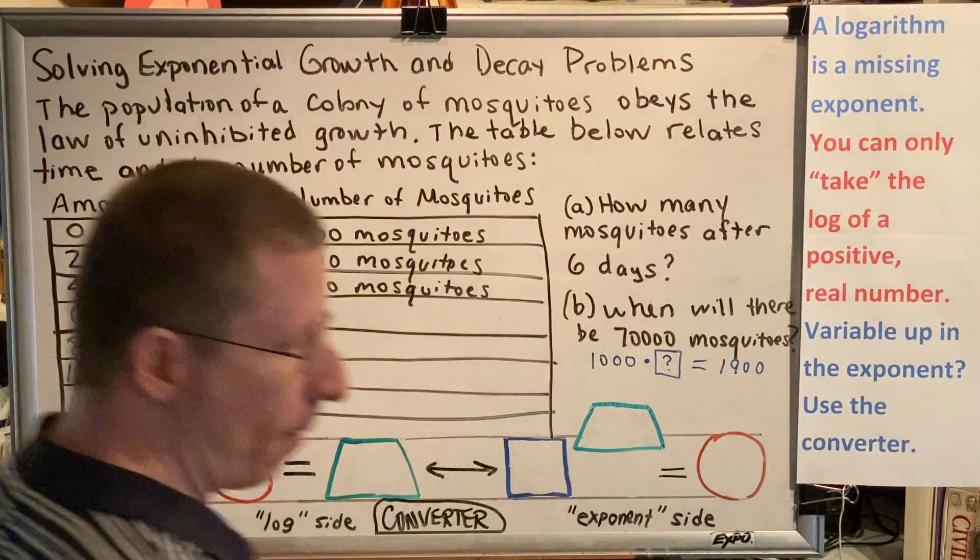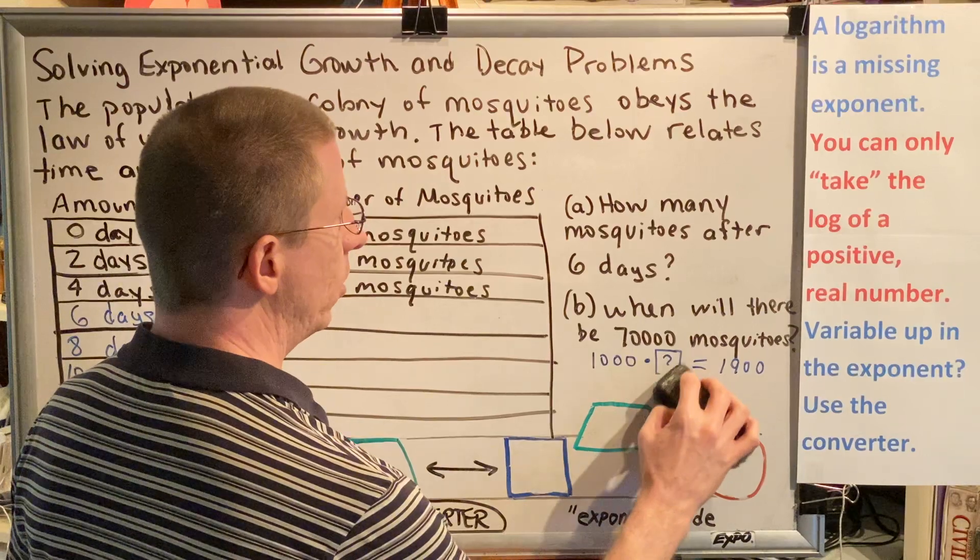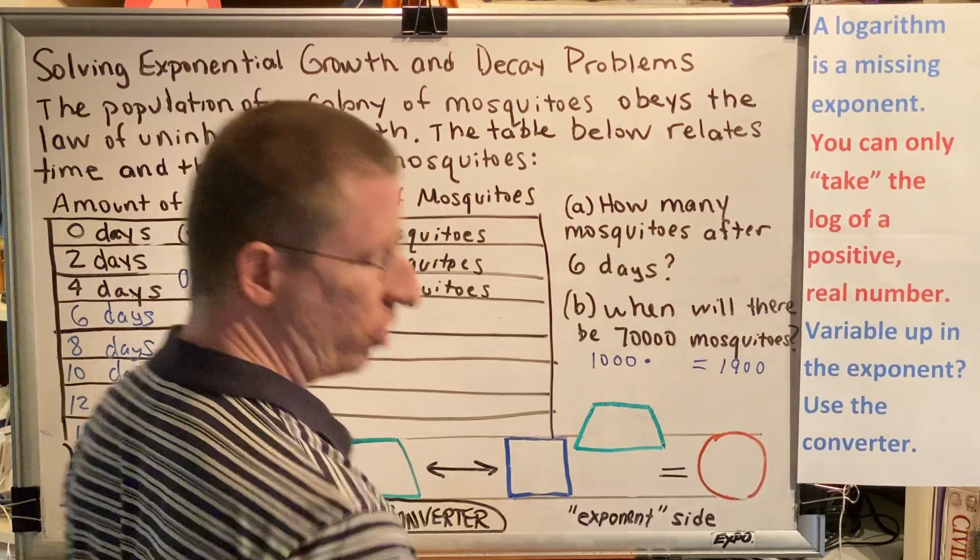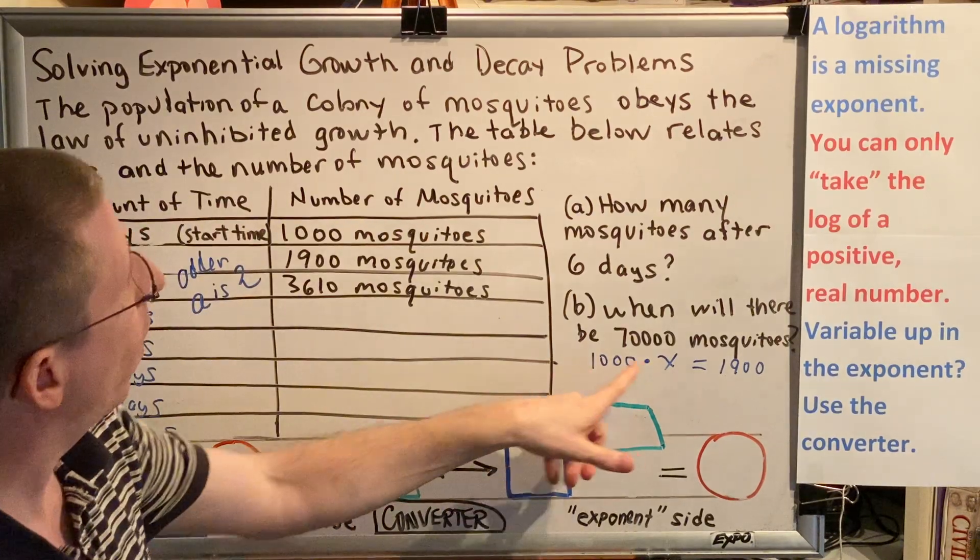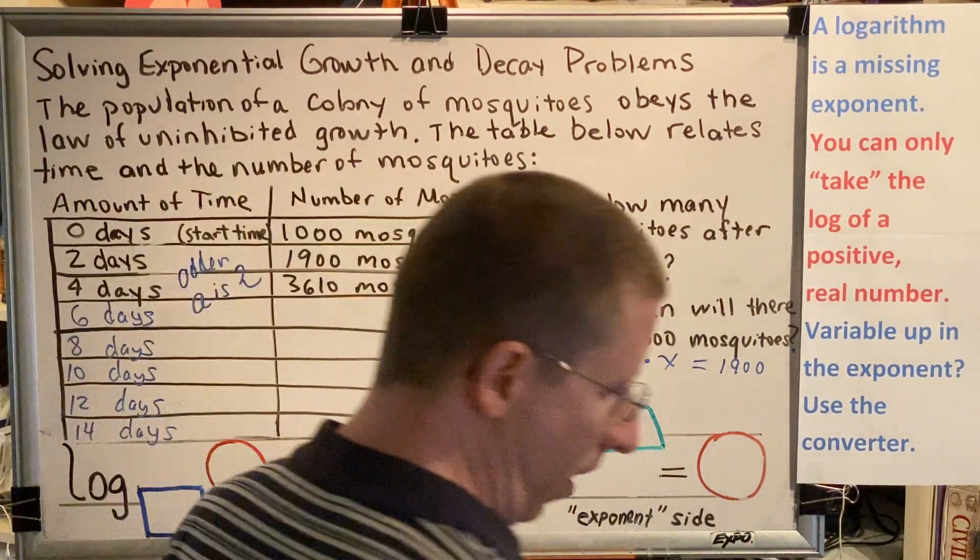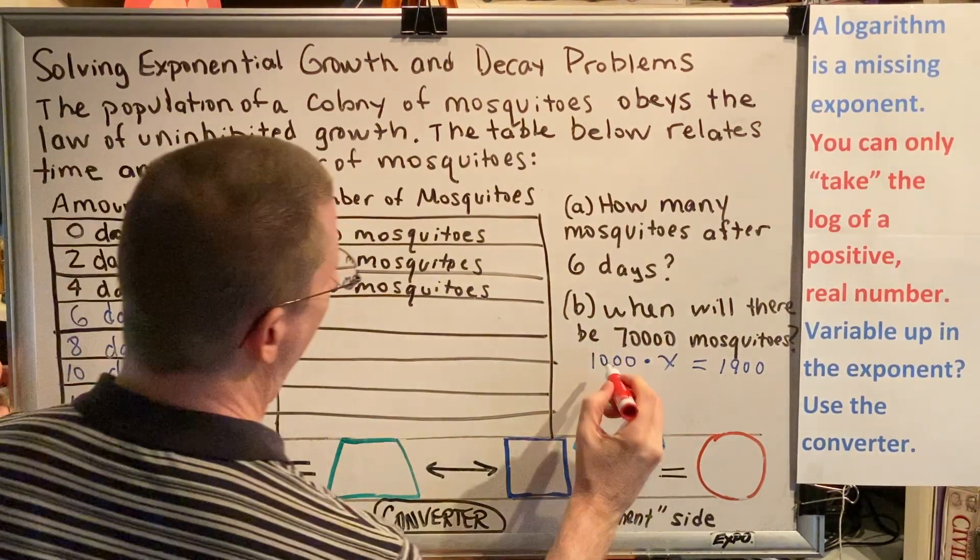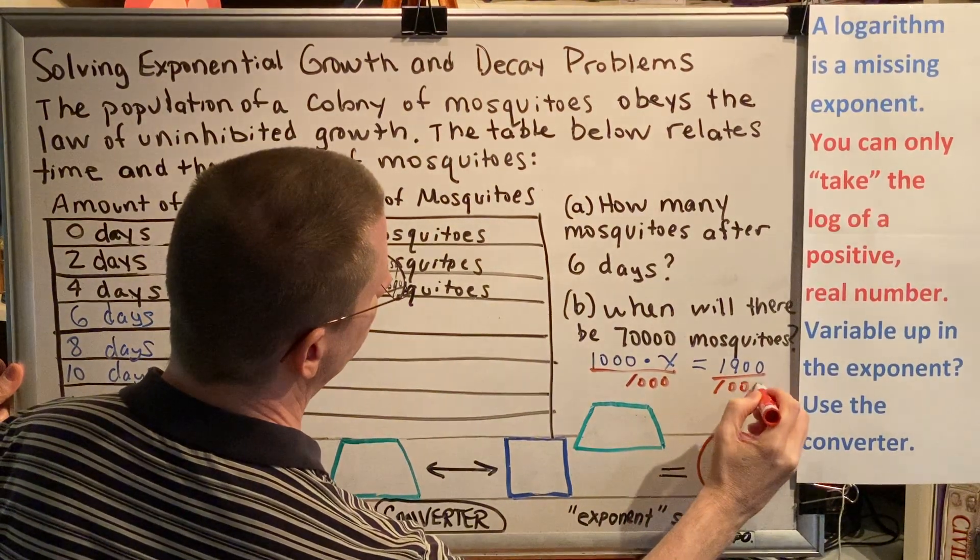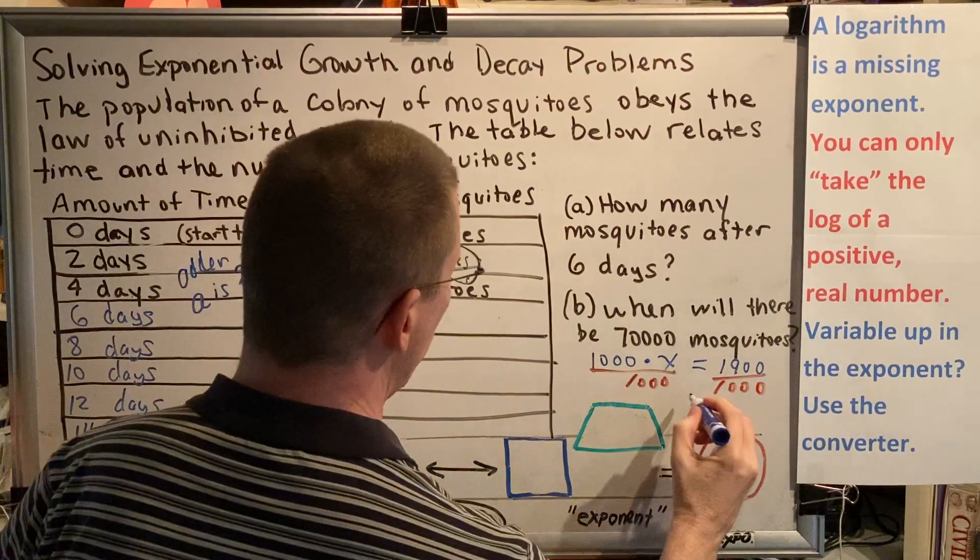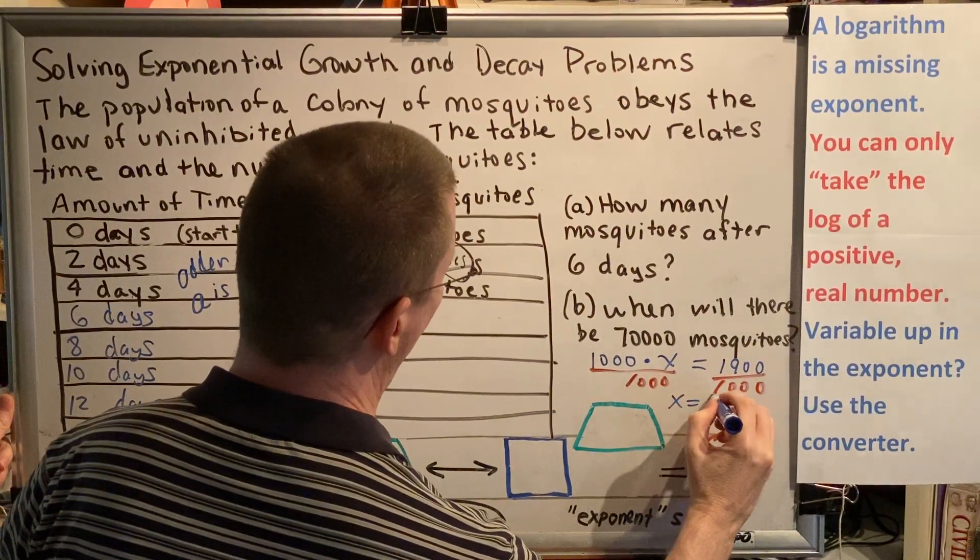In an algebra class, unknown number is x. So I'm just going to replace that question mark with an x. Now, if someone asked you to solve this equation, 1,000 times x equals 1,900, how would you do it? You'd just divide. Divide by 1,000 on both sides, and you'd get the value of x, and x would be equal to 1.9.